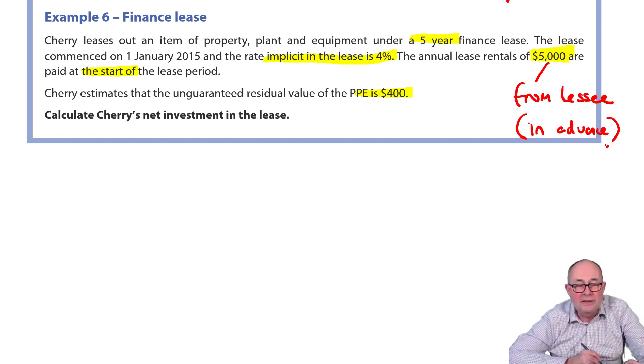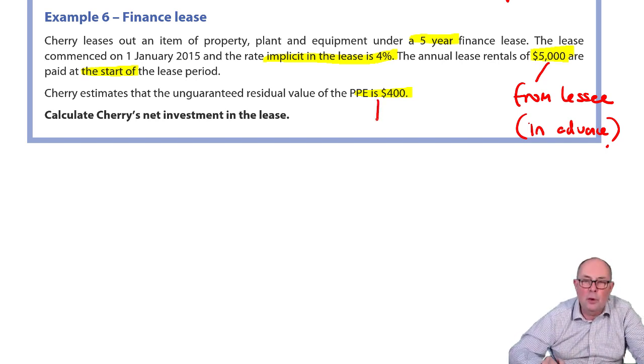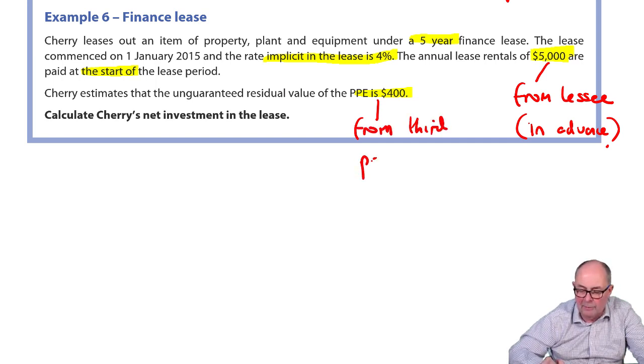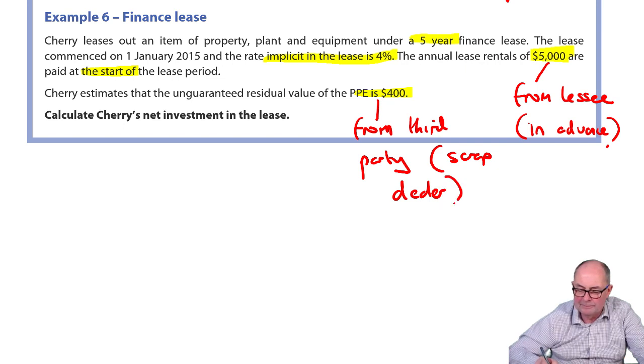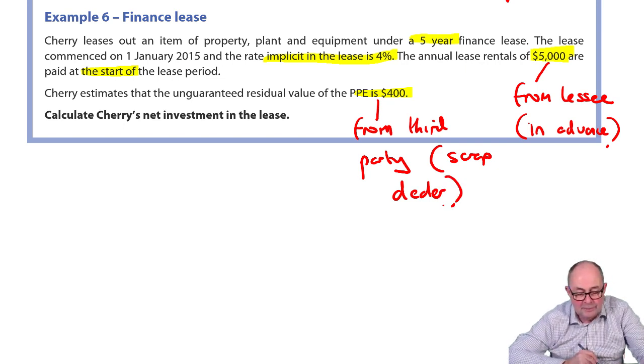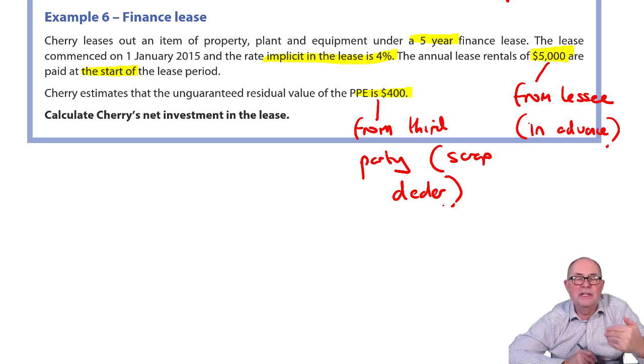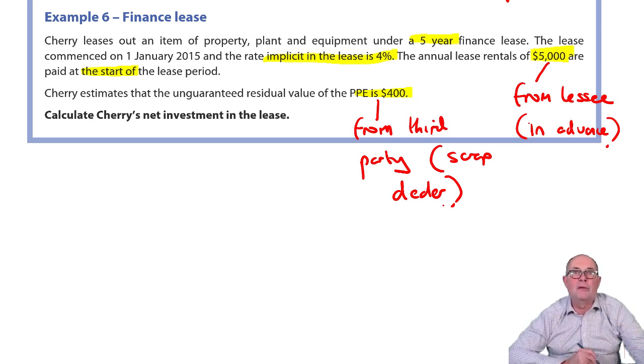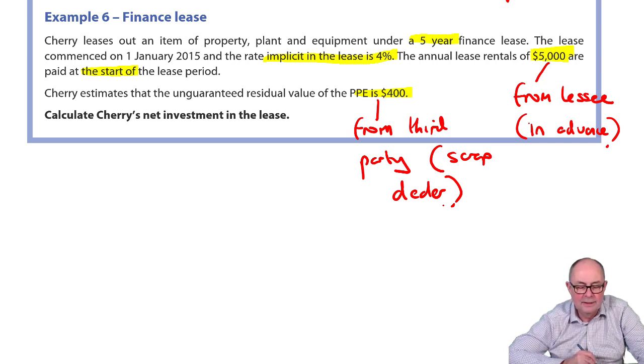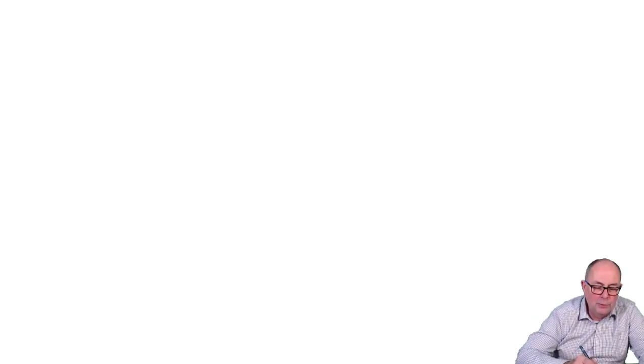At the end of the life, the property will be sold to a third party. So, the 400 I'd think about as scrap proceeds. I'll just write from third party, e.g. a scrap dealer. What we have to do is to work out what value would be booked in the account of the receivable at the start of the lease. You could be given discount tables, you might not. And even if you are sometimes, it's quicker to work things out on your calculator.